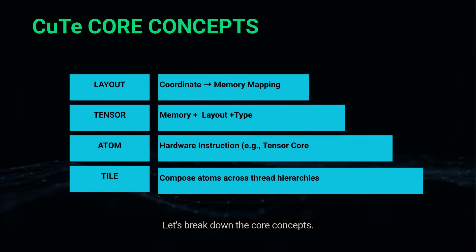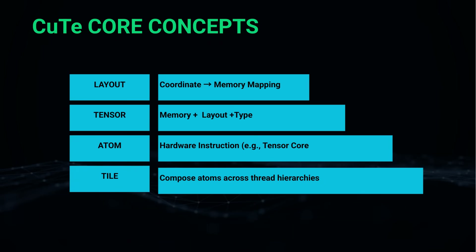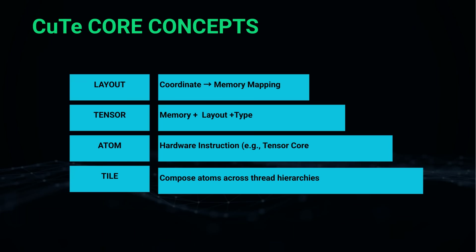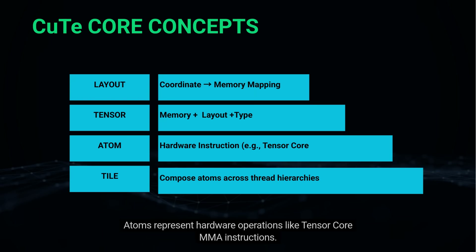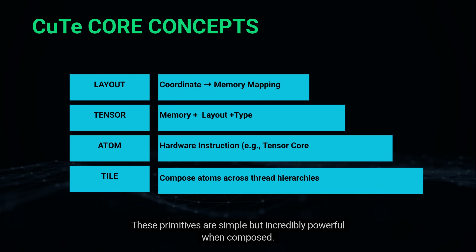The core CuTe concepts: layouts describe coordinate-to-memory mappings algebraically; tensors combine a memory pointer, a layout, and a data type; atoms represent hardware operations like tensor core MMA instructions; and tiles compose atoms across warp and thread block hierarchies. These primitives are simple but incredibly powerful when composed.